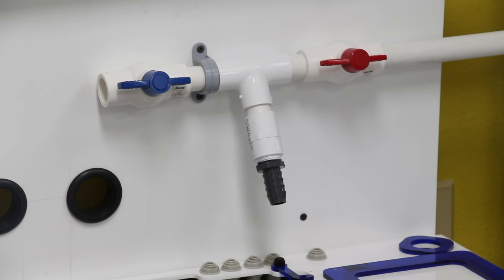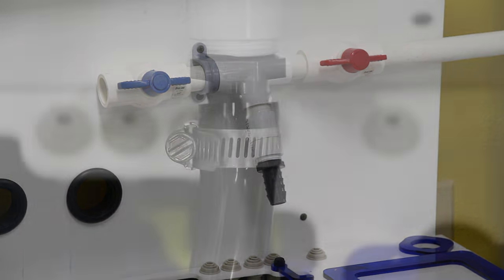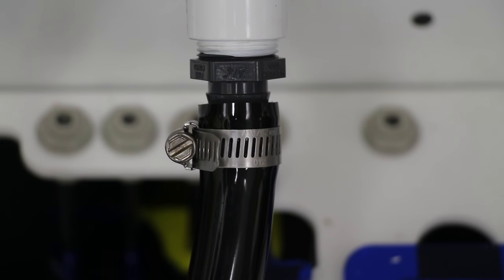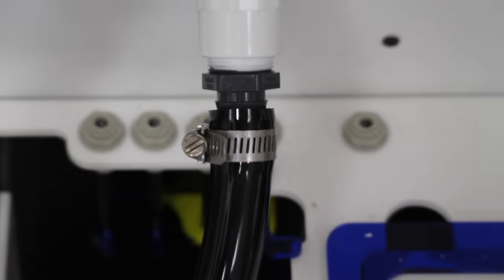For the return we created a simple manifold for future upgrades and additions. A short length of vinyl tubing is used between the return pump and our manifold to help dampen vibration and to allow us to easily service the return pump.